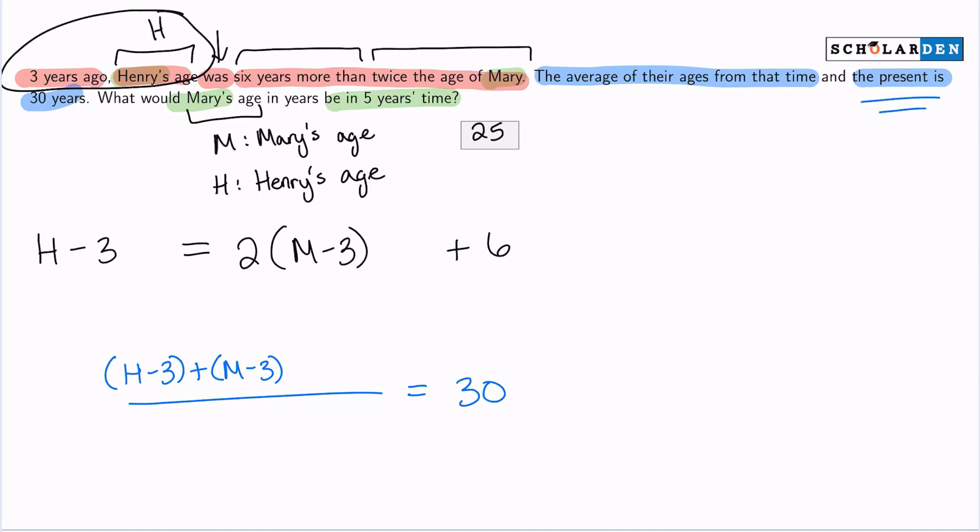And the present, Henry now and Mary now. That's one, two, three, and four. So four ages. The average of four ages is 30 years. Let me review this so we really have this down. We're talking about their ages three years ago, Henry and Mary three years ago, and their present ages, Henry and Mary. We take the average of those four ages, we get 30.